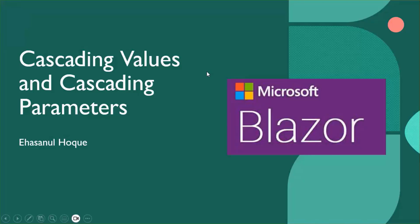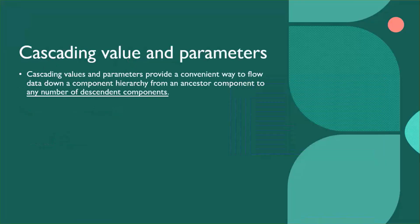In this Blazor tutorial, today I would like to discuss cascading values and parameters. Cascading values and parameters provide a convenient way to flow data down a component hierarchy from an ancestor component to any number of descendant components. Unlike component parameters, it can flow data down to any number of descendant components, as I discussed in another episode of this playlist.